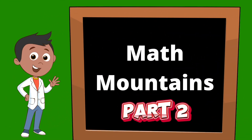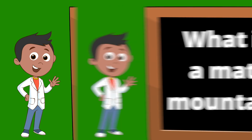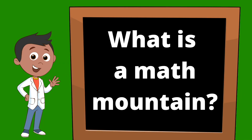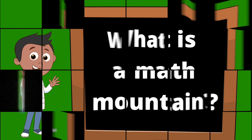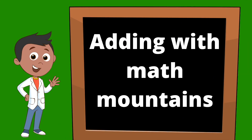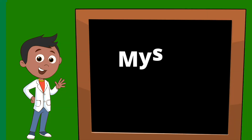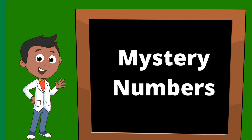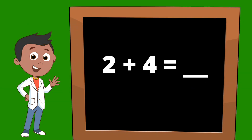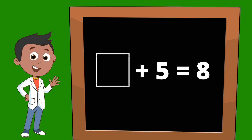Welcome to Math Mountains, part two. In part one, we already learned what Math Mountains are and how to add with Math Mountains to get a total. This time we're going to be learning how to add to find other mystery numbers. This means we can use the same technique we've already learned, but instead of solving for the total answer, we can find one of the add-ins here or here.